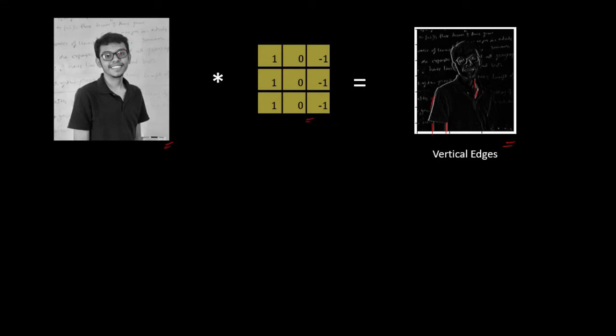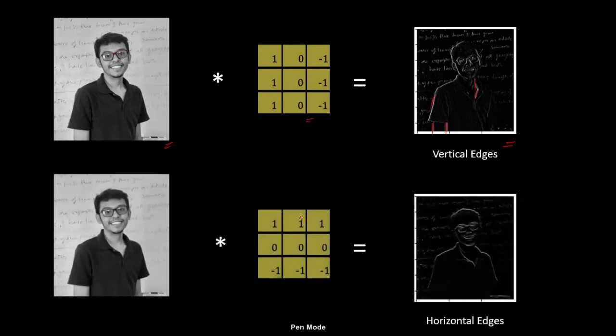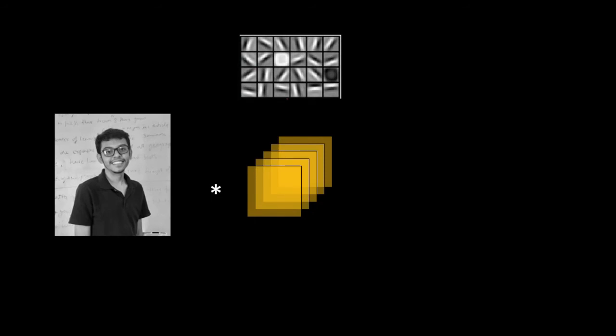Similarly, if we want to detect horizontal edges, we can use another filter that is just the transpose of the vertical edge detector filter. This filter acts as a horizontal edge detector, and when we convolve it with the same image, we get a resultant image where the horizontal edges are highlighted. In a single layer of a convolutional neural network, we use many such filters. Different filters detect different features — one might detect horizontal edges, another vertical edges, another circular features.